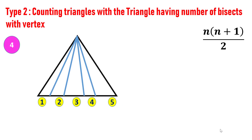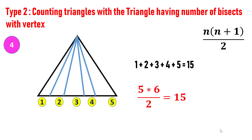Consider one more example. This is a pretty complex figure. Applying the second trick: number of parts is five, multiply by six, which yields 30, divide by two, which results in 15. So the number of triangles in this figure is 15.